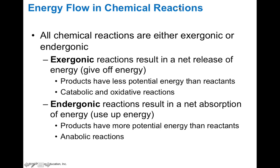In terms of energy flow and chemical reactions, all chemical reactions are either exergonic or endergonic. Exergonic reactions result in a net release of energy, where products have less potential energy than their reactants — you find this in catabolic and oxidative reactions. Endergonic reactions involve a net absorption of energy, where products have more potential energy than their reactants — you find this in anabolic reactions. For example, the synthesis of ATP is endergonic and anabolic, but when you use the energy in ATP that is a catabolic, exergonic reaction. These typically co-occur.